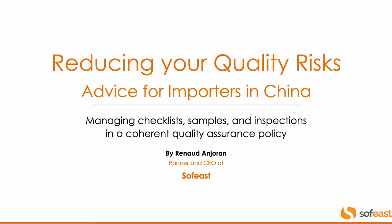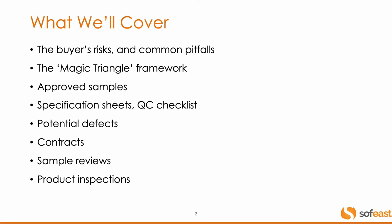Reducing your quality risks and setting up a coherent quality assurance policy for buying in China — this is what we'll cover. First, what are the risks, the most common risks for buyers and the common pitfalls that they tend to fall into. I will introduce a very powerful framework. And then I will cover some specific points: the approved samples and what to use them for and how to use them. The specification sheet which becomes the QC checklist — what you need, what it looks like, and so on.